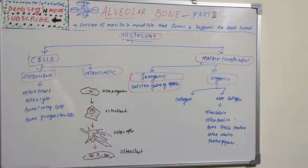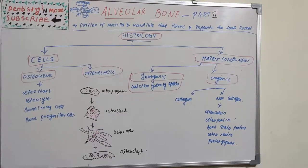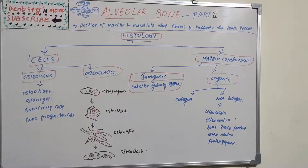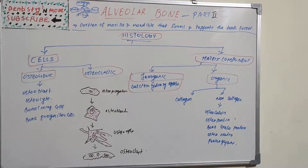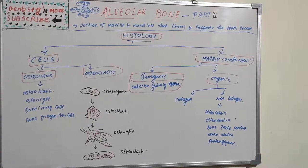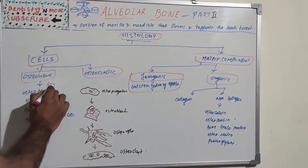Starting with osteoblasts: during embryonic development, the intramembranous bone of the maxilla and mandible initially forms from osteoblasts arising from condensing mesenchyme in the facial region. Osteoblasts are the most active secretory cells in bone. They are basophilic cuboidal or elongated cells rich in synthetic and secretory organelles such as rough endoplasmic reticulum, Golgi apparatus, granules, and microtubules. They produce type 1 collagen, non-collagenous bone proteins like sialoprotein, osteopontin, and osteonectin, plus growth factors. They also express and release alkaline phosphatase, which is very important in bone formation.